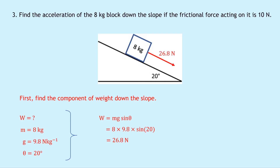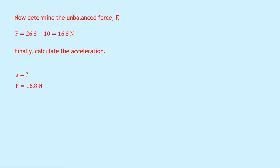We sketch that 26.8 N component down the slope on the diagram, and also draw the 10 N frictional force acting back up the slope, opposing motion. To find acceleration, we first find the unbalanced force: F = 26.8 − 10 = 16.8 newtons. Then using F = ma, rearranging gives a = F/m = 16.8 ÷ 8 = 2.1 m/s².